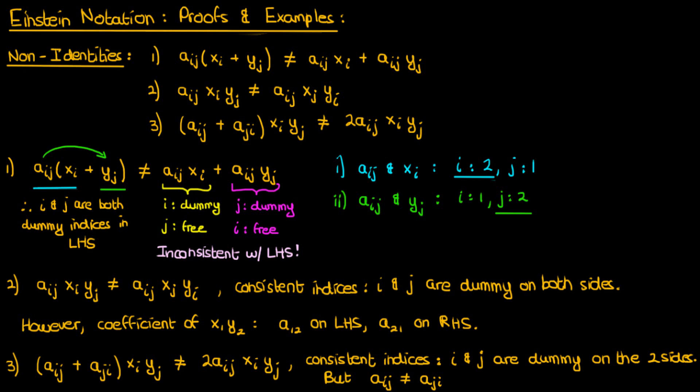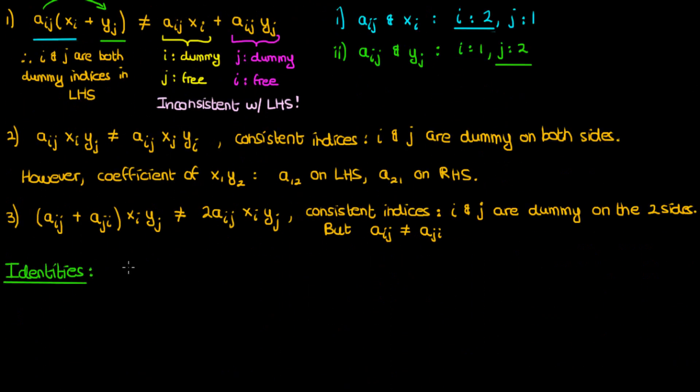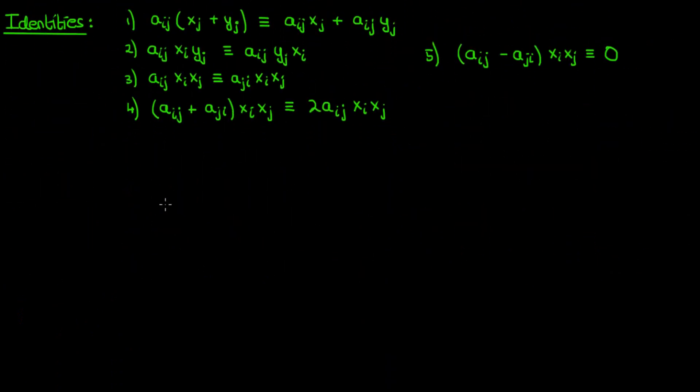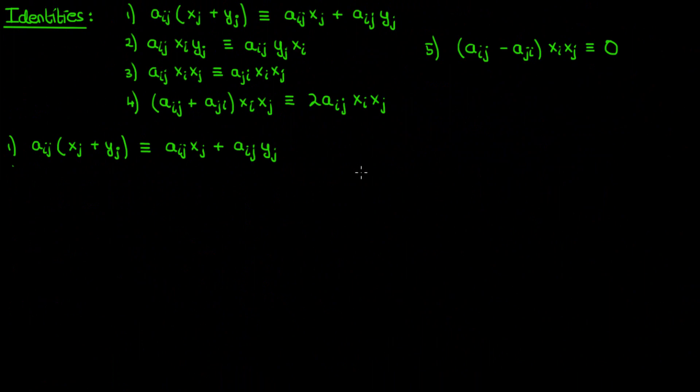In addition to the non-identities in Einstein notation, there's also five identities that I've written here. Again, I'm not going to rigorously prove all these. I'll explain why they're true, and hopefully my explanation will give you a better idea of how Einstein notation works. Now, this identity is very similar to the first non-identity. The only change is the fact that you have xj plus yj instead of xi plus yj. But this difference is enough to make both sides equal. The reason is that unlike the non-identity, the indices on both sides are now consistent.